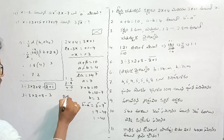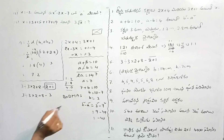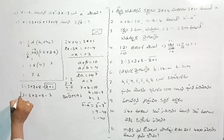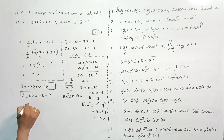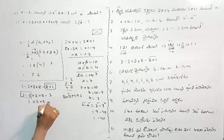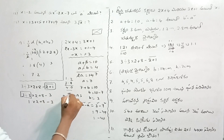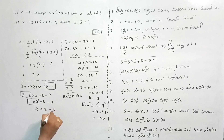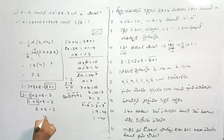Next we use the BODMAS rule. First brackets — none here. So this is the division. 3 divided by 3 is 1, into 2 plus 8 minus 3. Next, division is done. So the multiplication: 1 into 2 is 2, plus 8 minus 3. Then addition: 2 plus 8 equals 10. 10 minus 3 is 7.